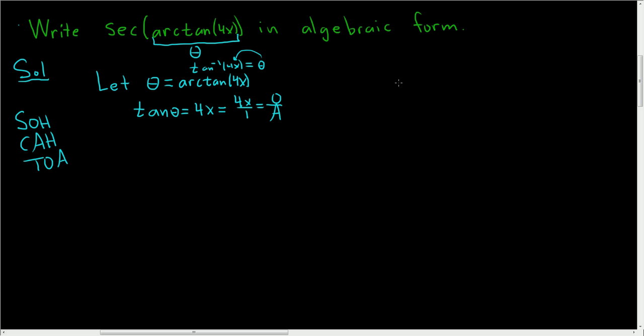And now we'll draw a triangle. So there's our triangle. And here's theta. And so the opposite will be 4x, and the adjacent will be 1, and so we'll call this c.